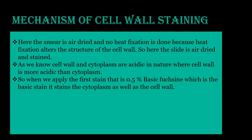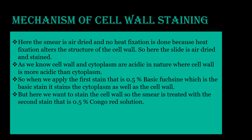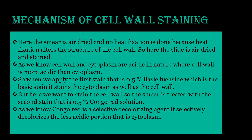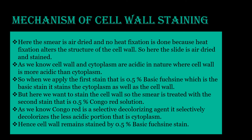When we apply the first stain — 0.5% basic fuchsine, which is a basic stain — it stains the cytoplasm as well as the cell wall, so both components get stained. But since we want to stain the cell wall specifically, the smear is then treated with the second stain, 0.5% Congo red solution. Congo red solution is a selective decolorizing agent that selectively decolorizes the less acidic portion, that is the cytoplasm. Ultimately, the cell wall remains stained by basic fuchsine and the cytoplasm remains colorless.